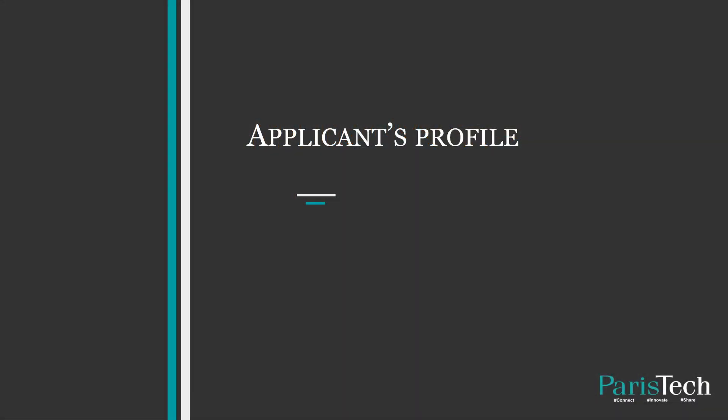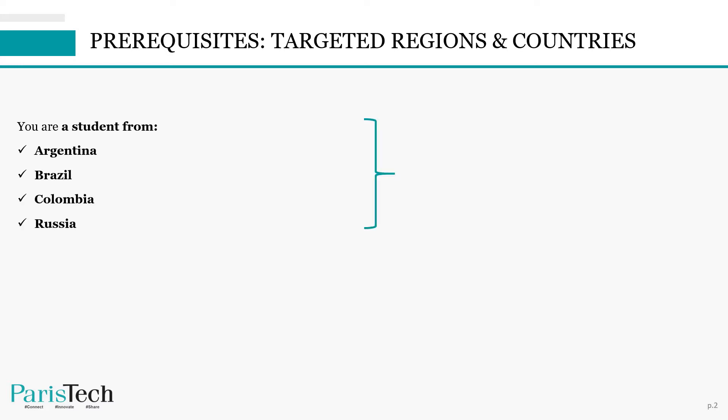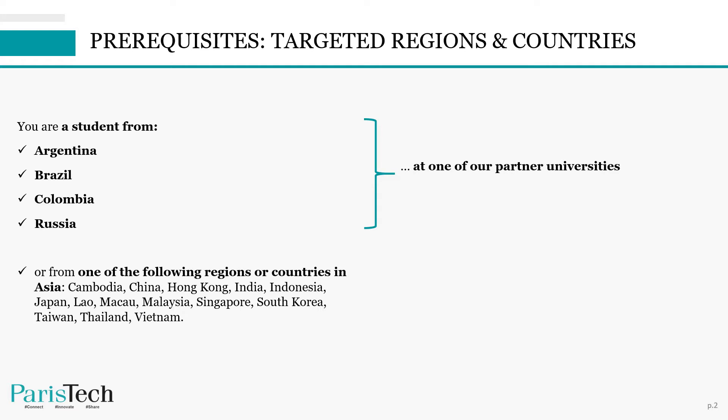In this video we will explain the PariTech International Admission Program procedure. We will start with the applicant profile. There are prerequisites to apply. The first is that there are targeted regions and countries. To apply, you should be a student from Argentina, Brazil, Colombia, or Russia at one of our partner universities, or from one of the following regions in Asia: Cambodia, China, Hong Kong, India, Indonesia, Japan, Laos, Macau, Malaysia, Singapore, South Korea, Taiwan, Thailand, or Vietnam, from any university.